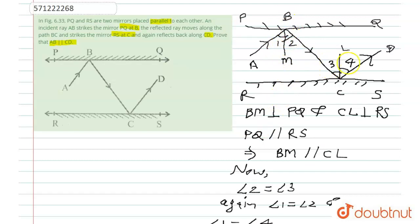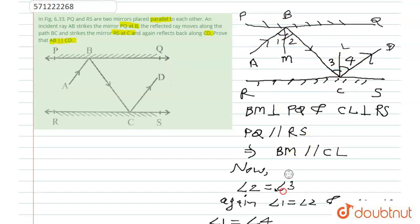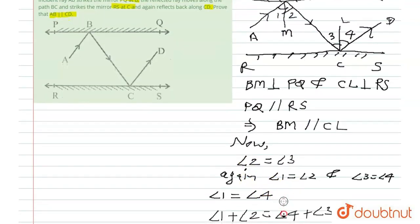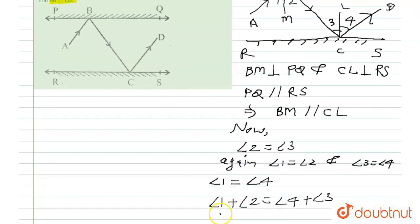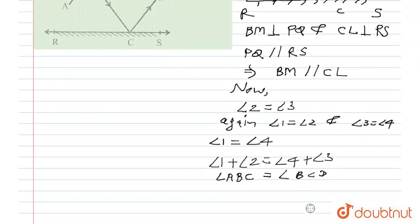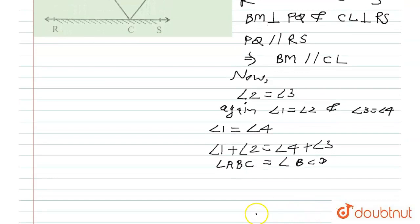Angle 1 plus angle 2 is nothing but angle ABC, and angle 3 plus angle 4 is nothing but angle BCD. So angle ABC equals angle BCD. These are co-interior angles that are equal, and hence we can conclude that AB is parallel to CD.